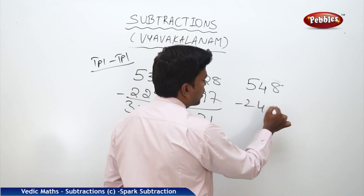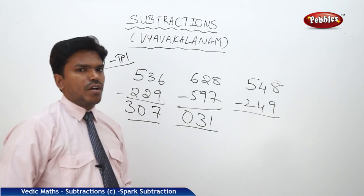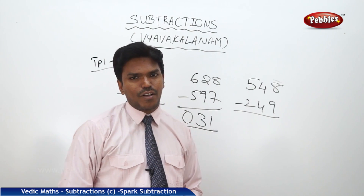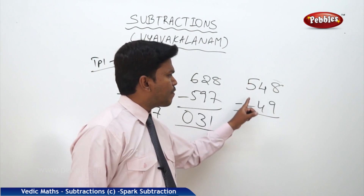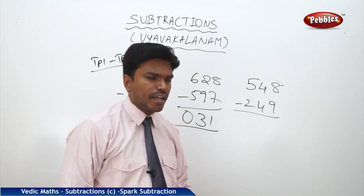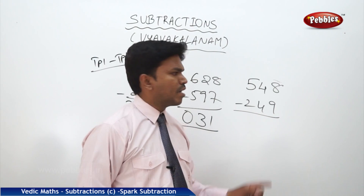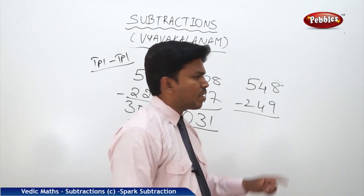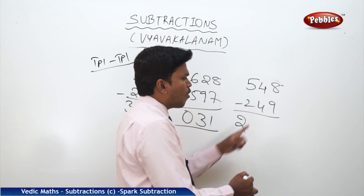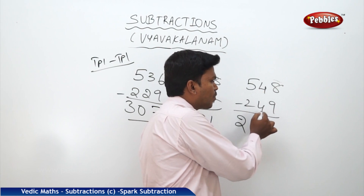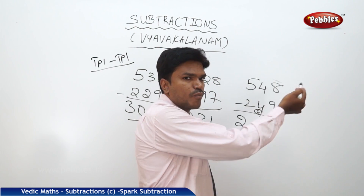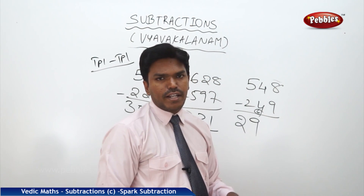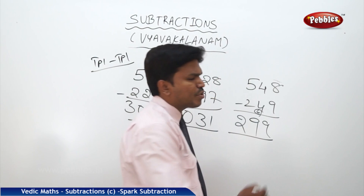Next: 548 minus 249. You got the same numbers in the middle — it is an exception case, be careful. 5 minus 2 is 3. But the next numbers — match or mismatch? We cannot say. Go for next — 8 and 9 are mismatched. So the middle pair is also mismatched, and 3 becomes 2. Obviously the middle becomes 9: 4 plus 6 is 10, but next number is mismatched, so 10 becomes 9. Now 8 and 9 — mismatched: 8 plus 1 is 9. So my answer is 299.